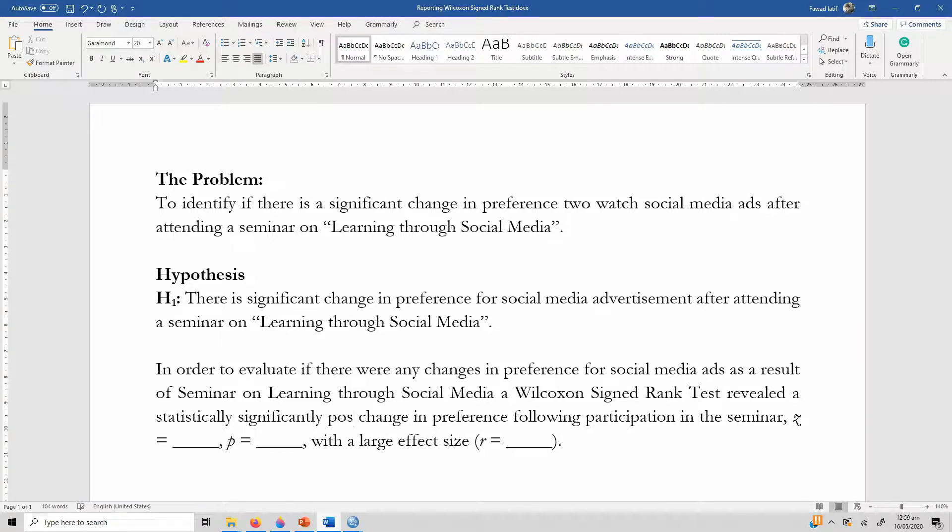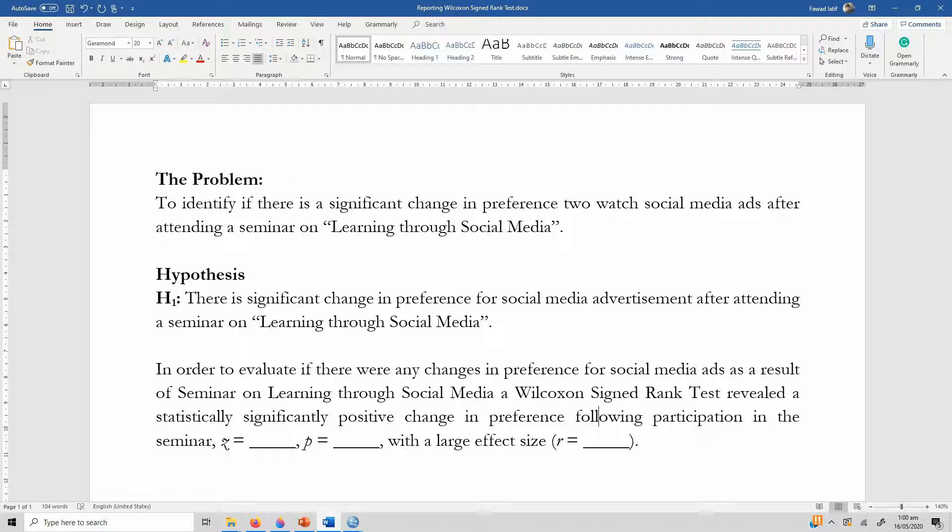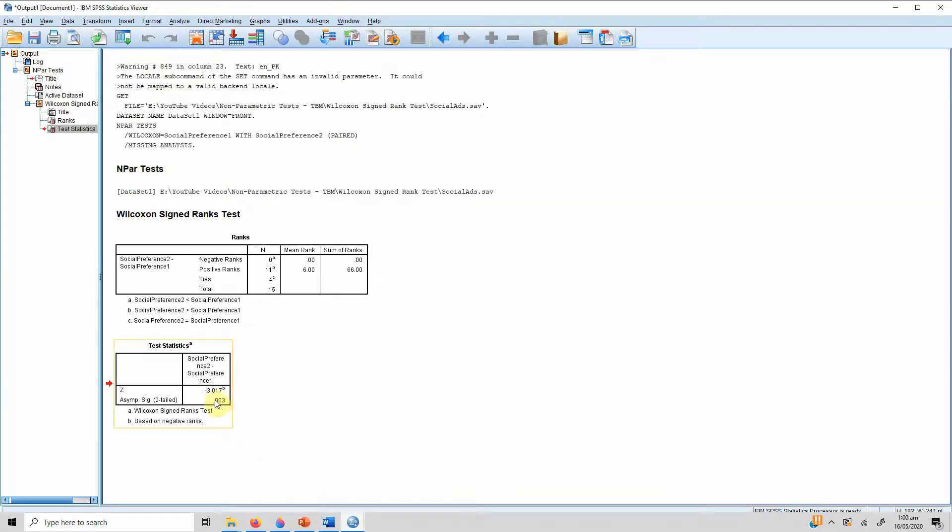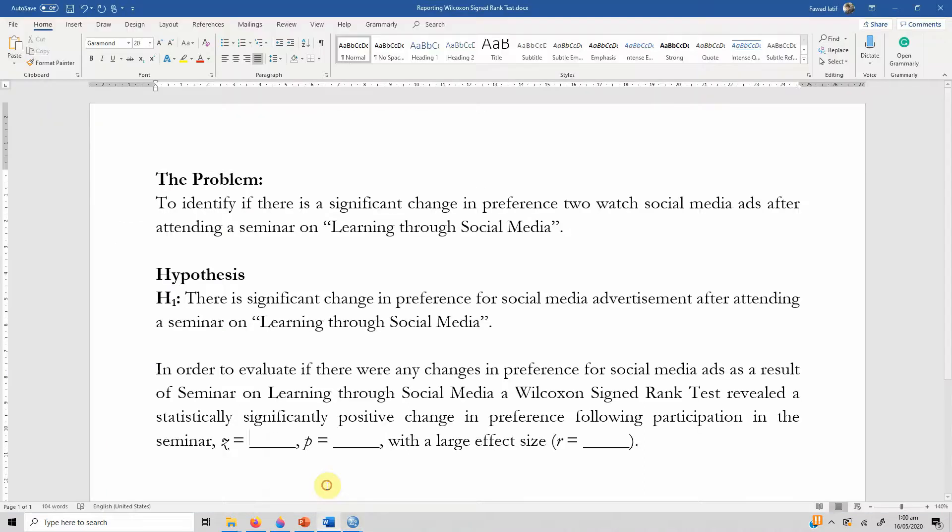What is our z value? Our z value is minus 3.017. Our p value is 0.003.